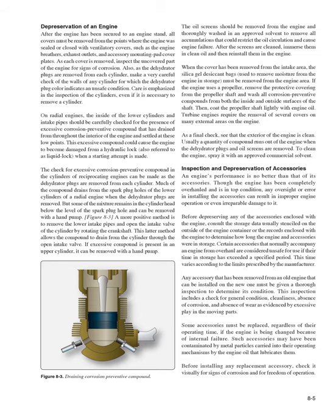Depreservation of an engine: after the engine has been secured to an engine stand, all covers must be removed from points where the engine was sealed, such as engine breathers, exhaust outlets, and accessory mounting pad cover plates. As each cover is removed, inspect the uncovered part for signs of corrosion. As the dehydrator plugs are removed from each cylinder, make a careful check of cylinder walls if the dehydrator plug color indicates an unsafe condition. On radial engines, the inside of the lower cylinders and intake pipes should be checked for excessive corrosion preventive compound that could cause hydraulic lock when a starting attempt is made.